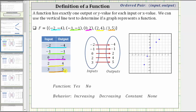Another way to express a set of ordered pairs is to show the mapping, which lists the inputs and outputs separately and shows the input-output relationship. When negative two is the input, negative four is the output; when negative one is the input, negative one is the output, and so on. The mapping is a nice representation because we can easily determine whether we have a function. Since each input is paired with exactly one output, we do have a function.